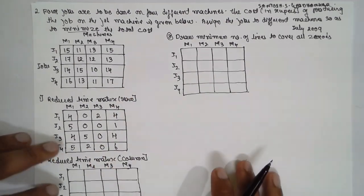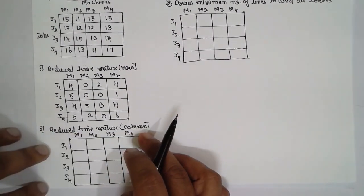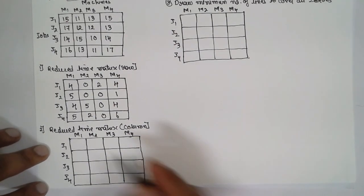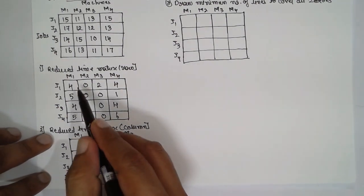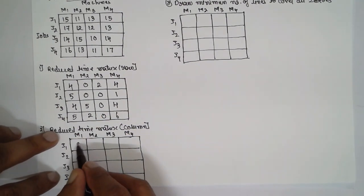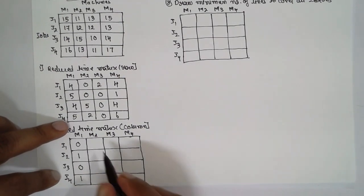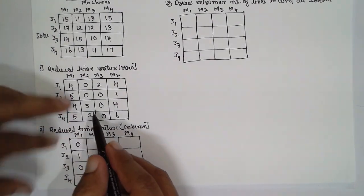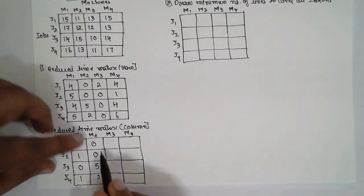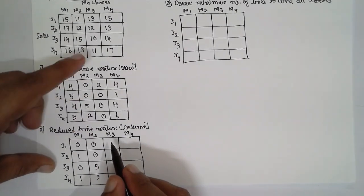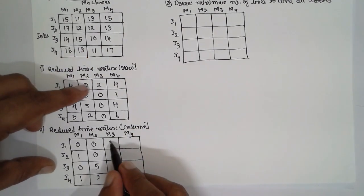Now we reduce the matrix column-wise. For each column, find the smallest value and subtract it from all entries in that column. In column 1, the smallest is 4: 4−4=0, 5−4=1, 4−4=0, 5−4=1. In column 2, the smallest is 0, so values remain the same. In column 3, the smallest is 0, so: 2−0=2, 0−0=0, 0−0=0.